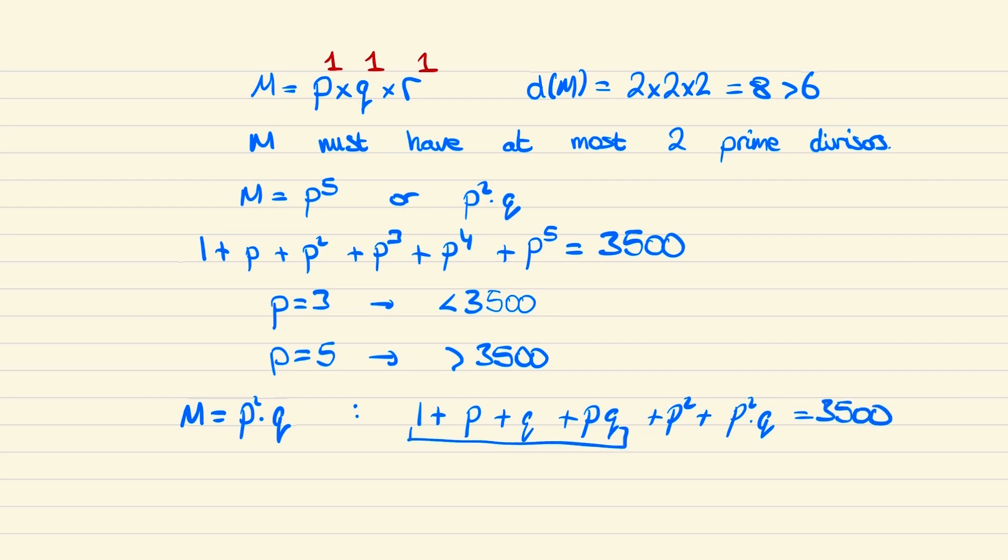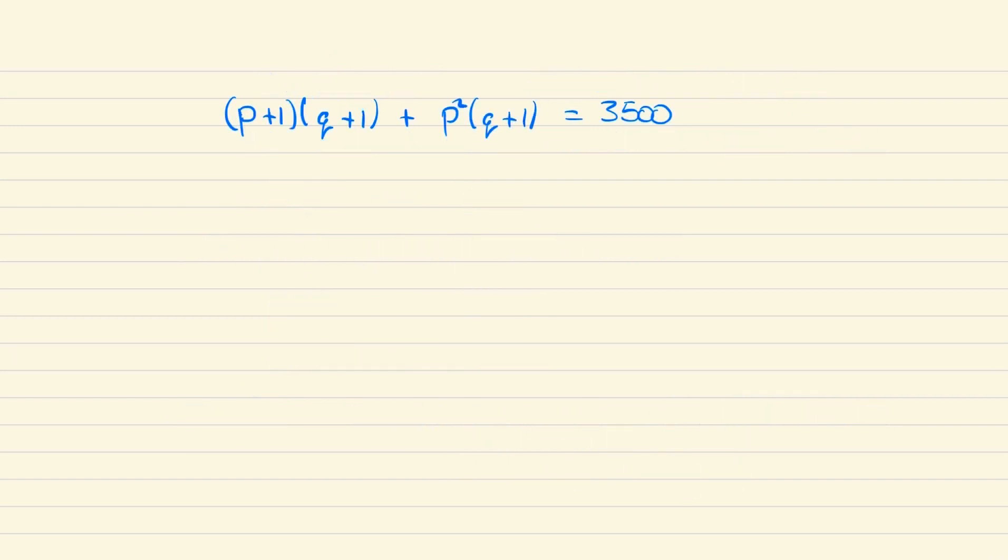Now the first four terms can be factorized as (p+1)(q+1), and the next two can be factorized as p²(q+1). So we can factorize this once more as (q+1)(p²+p+1), and the prime factorization of 3500 is 2²×5³×7.